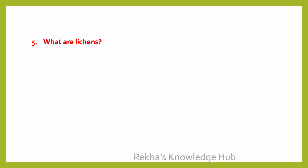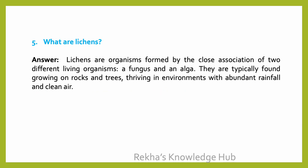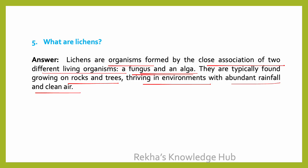What are lichens? Lichens are organisms formed by the close association of two different living organisms — a fungus and an algae. They are typically found growing on rocks and trees, thriving in environments with abundant rainfall and clean air.